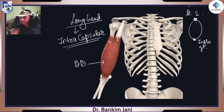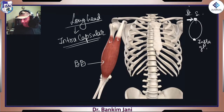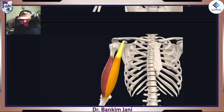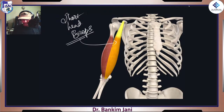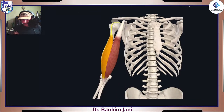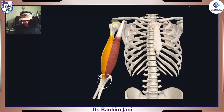Long head of triceps lands on the infraglenoid tubercle. Both heads of biceps — short and long — they come together forming a flat tendon. What is this called? Fill in the blank: bicipital... it is a flat tendon, so it is called an aponeurosis. Aponeurosis is a flattened tendon — a sheet-like structure, histologically similar to tendon but flat. That is the bicipital aponeurosis.